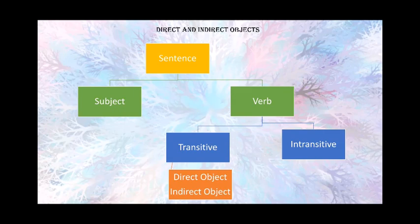Transitive verbs need an object to add meaning to the sentence. Always remember this. Whereas intransitive verbs do not need an object. So in a sentence, we have a subject and a verb — one is transitive and one is intransitive. Direct and indirect objects are always with the transitive verb.